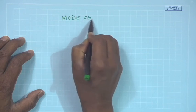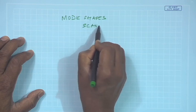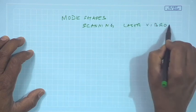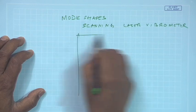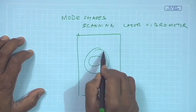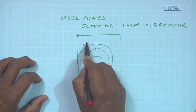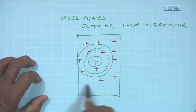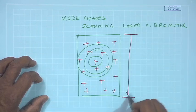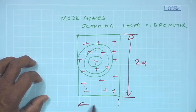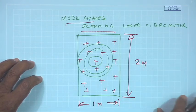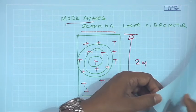We can have scanning laser vibrometers for mode shapes, where in one go you can get the mode shapes of a plate or structure by shooting a laser beam array across it — for example, over a 2-meter by 1-meter area. Laser-based monitoring is again an emerging area.